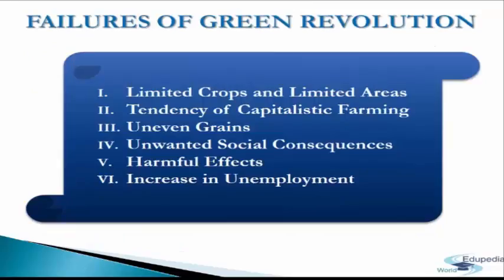After discussing the achievements of the Green Revolution, we now discuss its failures. The Green Revolution was limited to a few crops and a few regions of the economy — its spread effects were limited. The main failures include limited crops and limited area. As the Green Revolution had limited application to wheat and rice growing states of Punjab, Haryana, UP, and Andhra Pradesh, these states benefited the most economically.